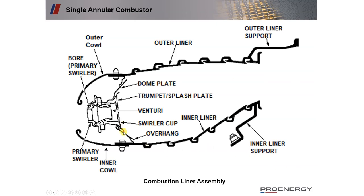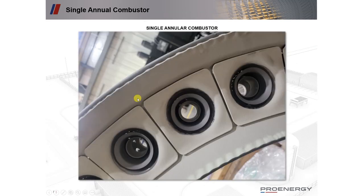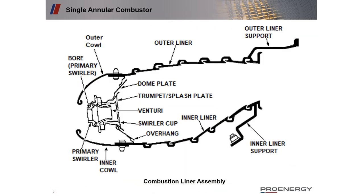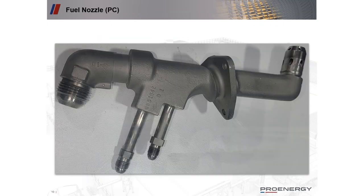The cowling on the dome meets up with the liner. There's also a swirler cup and a trumpet splash plate, again trying to keep the actual highest peak temperatures off of our metal components.